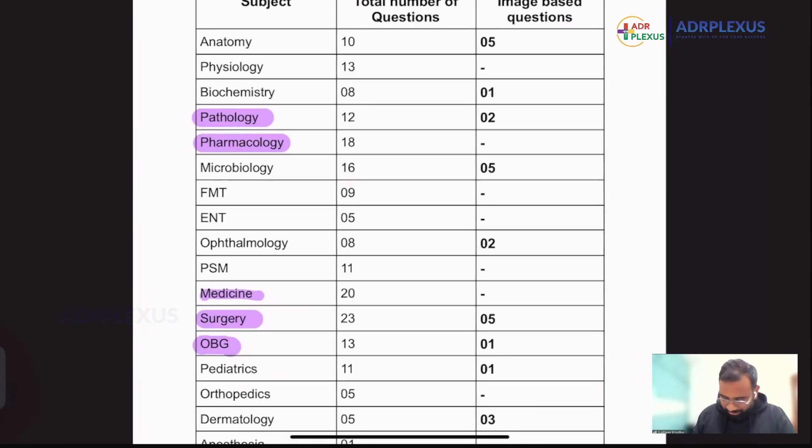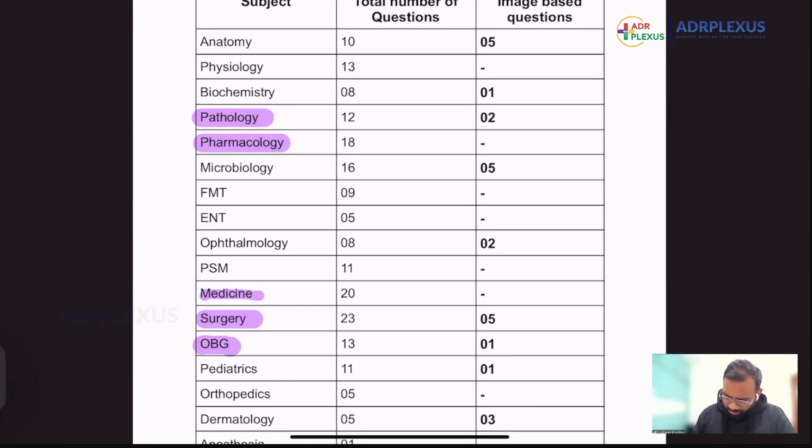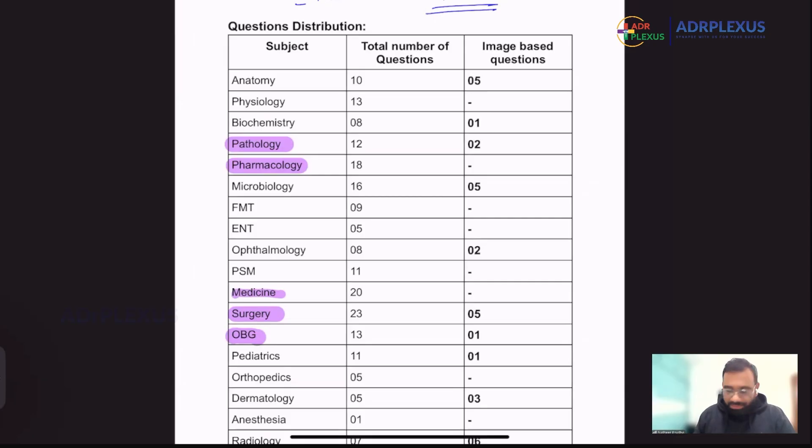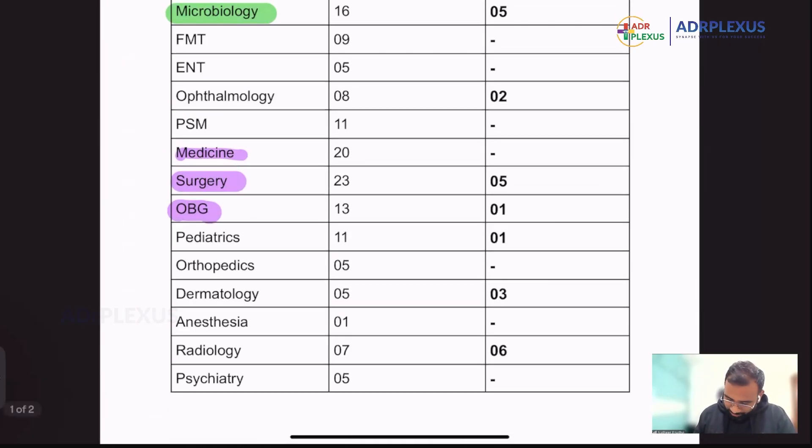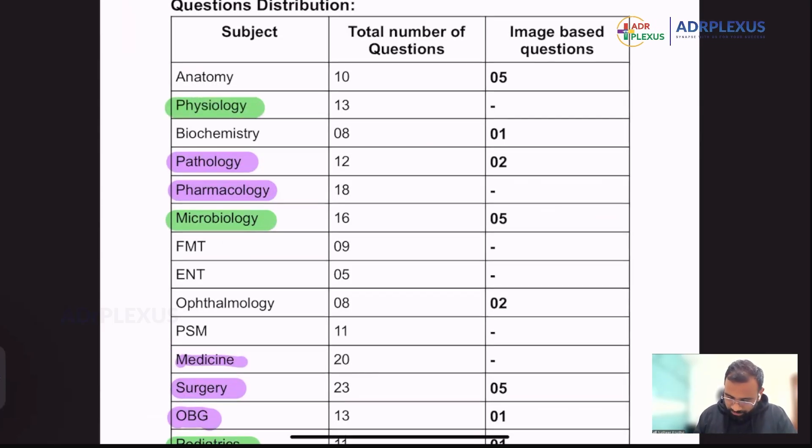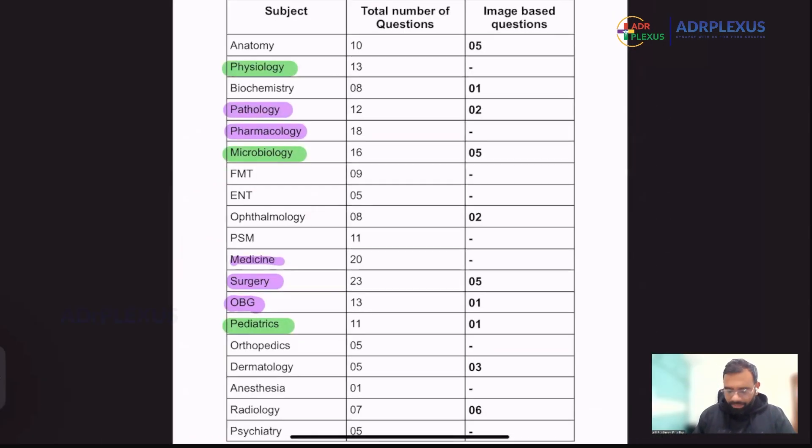As usual, the same thing again repeated here, major number of questions from these subjects. But apart from those subjects, we have got like many questions from microbiology, almost like 16 questions. Again, from pediatrics too, we have got 11 questions. And from physiology, we have got 13 questions. This is like a second highest number of questions we can tell.